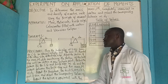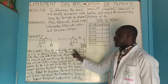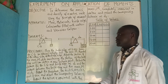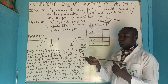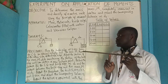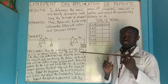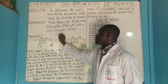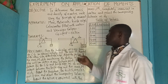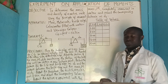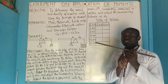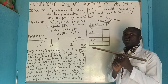The procedure says to place the knife edge at 5.0 cm from the center of gravity. First, you have to get your meter rule, keep it on a knife edge, and note your center of gravity. Note that the center of gravity has a range and could be between 48 to 52 cm depending on the meter rule you are using.